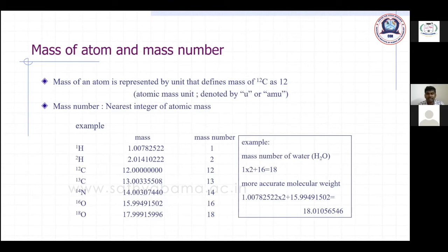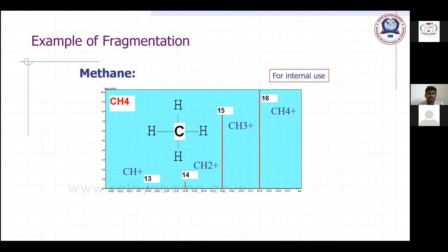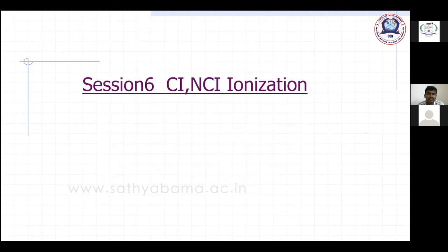In nature, different isotopes of carbon and hydrogen exist. GC-MS is useful for the identification of isotopes as well. For example, methane (CH₄) fragmentation: CH₄⁺ gives fragments CH₃⁺ + H, CH₂⁺, CH⁺, giving mass values of CH₃ = 15, CH₂ = 14, CH₄ = 16. Like that, you will get different fragment values for each molecule.